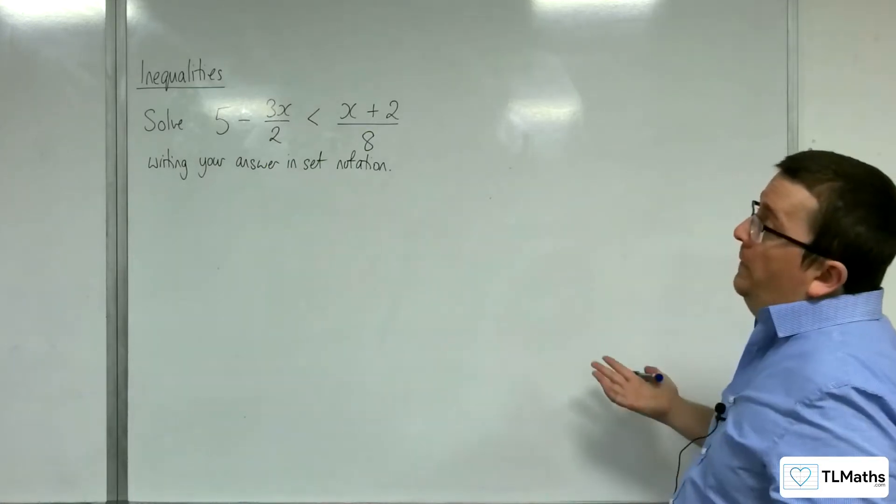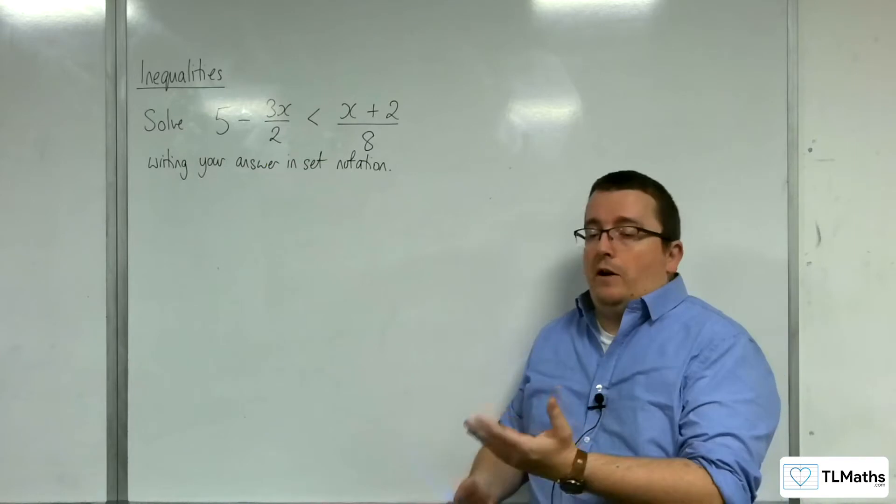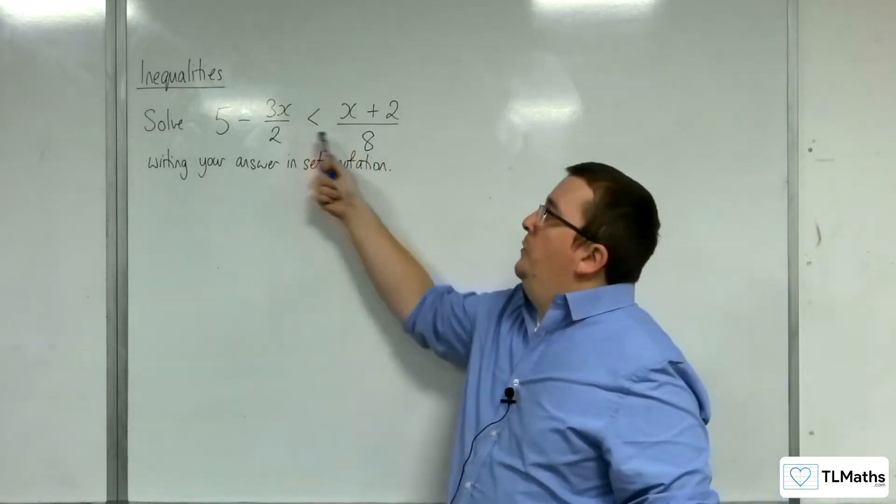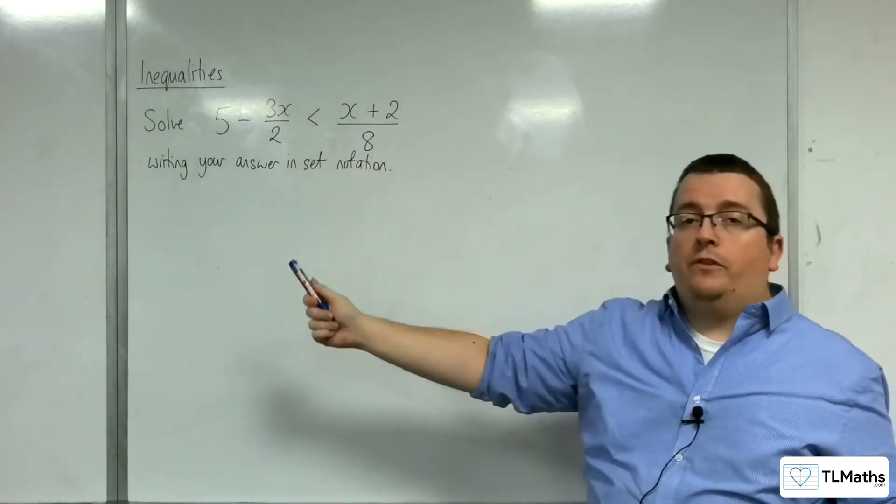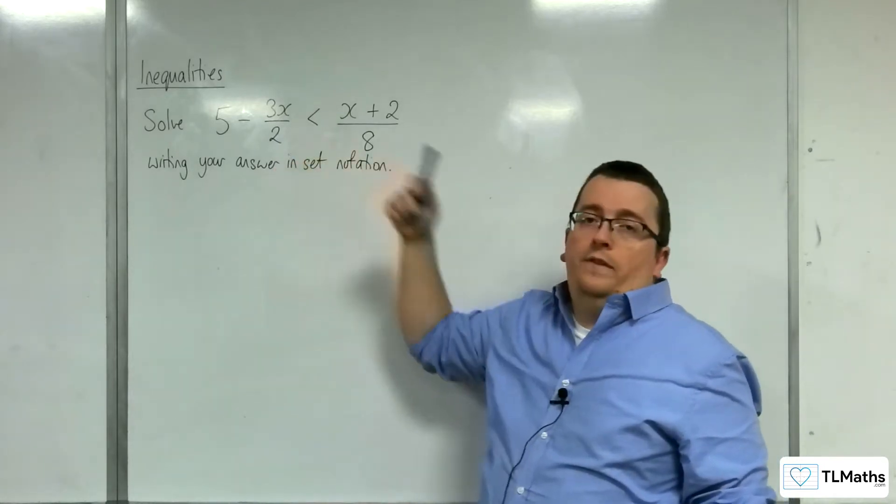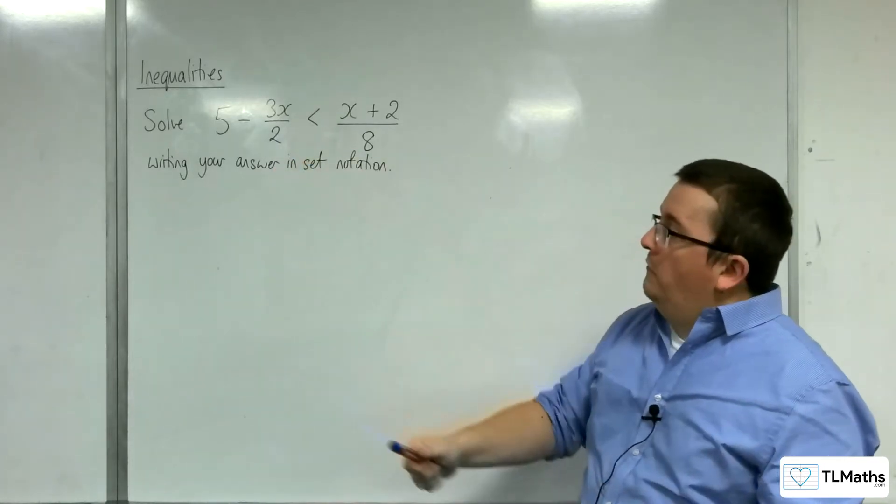The first thing I would do is get rid of the fractions. Conveniently, we've got divide by 2 and divide by 8. If I multiply everything through by 8, that's also going to get rid of this fraction here as well. I can do it in one fell swoop.